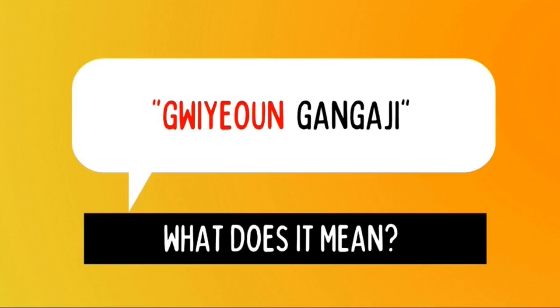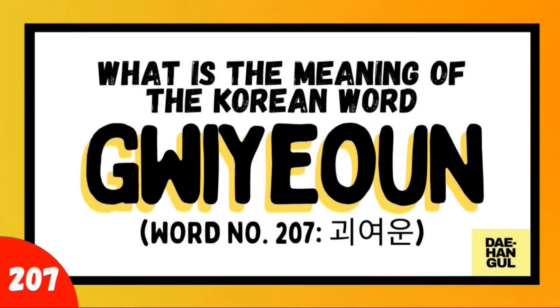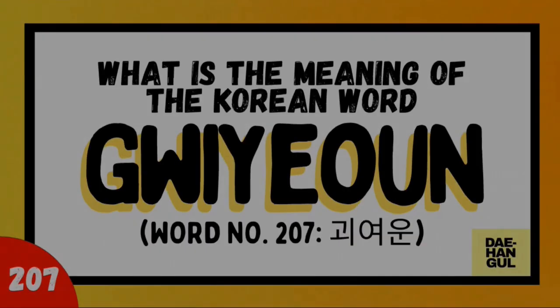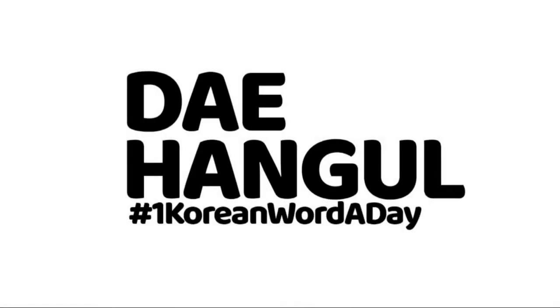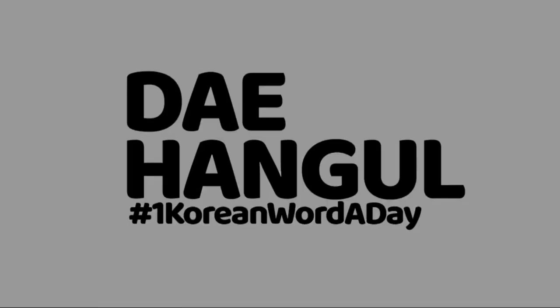What does this sentence mean? The word in red letter is kyoun. Today on One Korean Word a Day here at Dayhango, we are going to study the word kyoun. Let's start. Learn Korean one word at a time, only here at Dayhango. Word number 207.